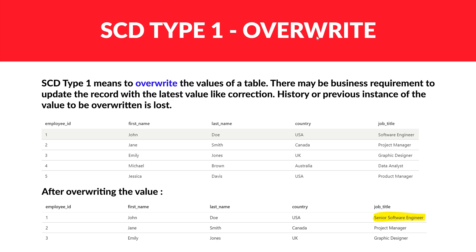SCD Type 1 is one of the very important concepts in data warehousing. A simple way to remember SCD Type 1 is the word 'override.' In SCD Type 1, we override the values — we don't maintain the history of previous values. Looking at this sample table, after implementing SCD Type 1, the job title for employee ID 1 was overridden from 'Software Engineer' to 'Senior Software Engineer.'